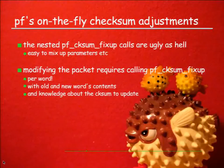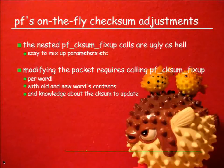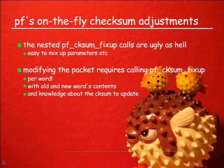We have to call PF checksum fixup per word we touch in the packet, for each and every single word. PF checksum fixup needs the old word and the new word to calculate the delta and apply it. It needs to see old word, new word, and the checksum. It's nested calls of PF checksum fixup all over the place, and the outermost call is different from all the inner calls - really easy to screw up and ugly as hell.